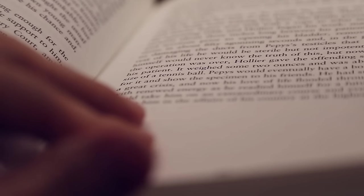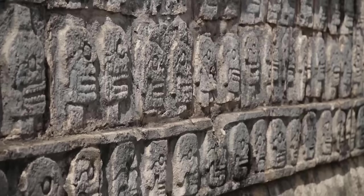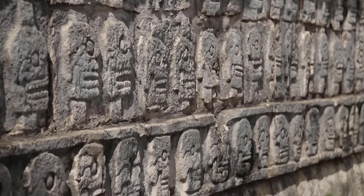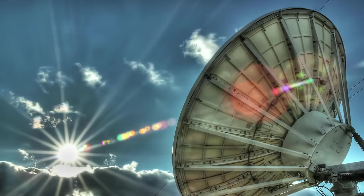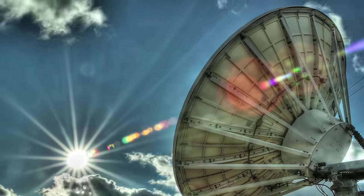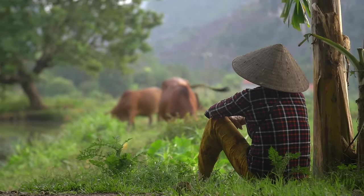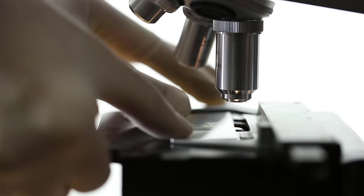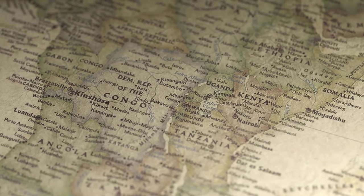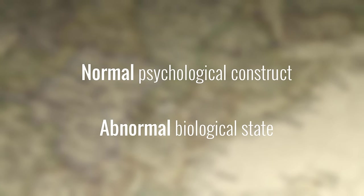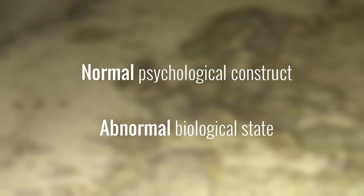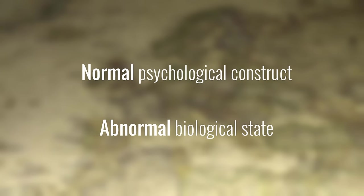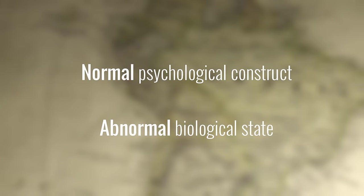They say that the value of a theory lies in how well it is able to explain what we observe, and aberrant salience appears to pass this test. For example, we have long wondered why the content of delusions in schizophrenia varies so drastically from culture to culture. Someone in a modern city is more likely to believe that satellite waves are broadcasting their thoughts, while someone from a rural area may say their thoughts are being stolen by a neighbor's curse. The concept of aberrant salience bridges this gap by arguing that delusions are normal psychological constructs generated by a person in an abnormal biological state — so they naturally draw upon that person's own unique experiences and cultural values, even if the underlying biological abnormality is the same.